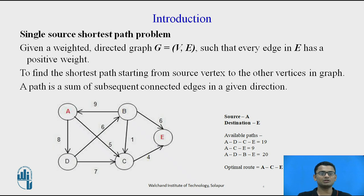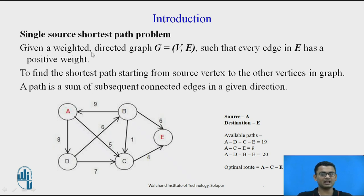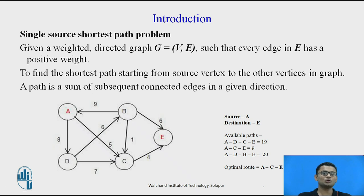Dijkstra's algorithm is applied to find a single source shortest path among all the nodes of a given weighted graph. Given a weighted directed graph such that each edge has a positive weight, the objective is to find a shortest path from the source node to the destination node or to all other nodes which exist in the graph.